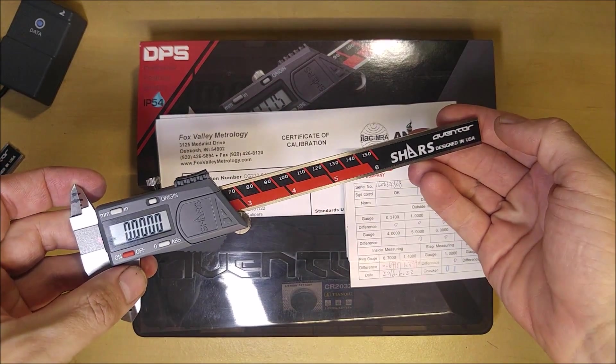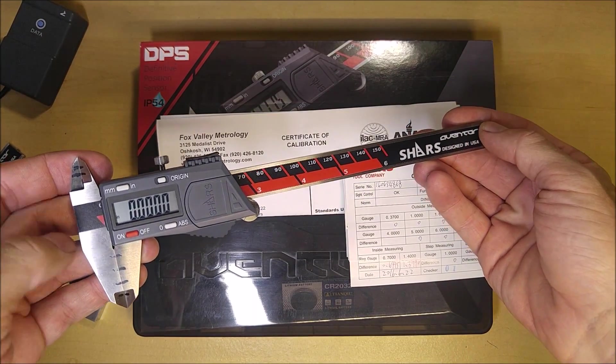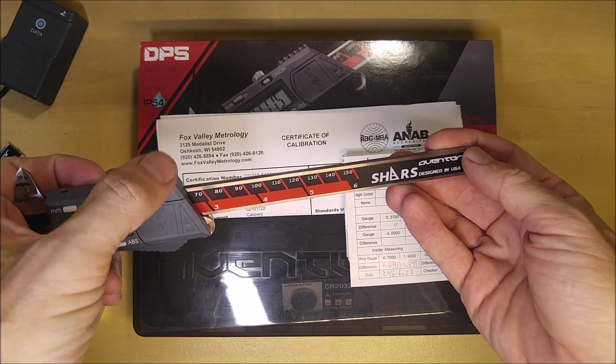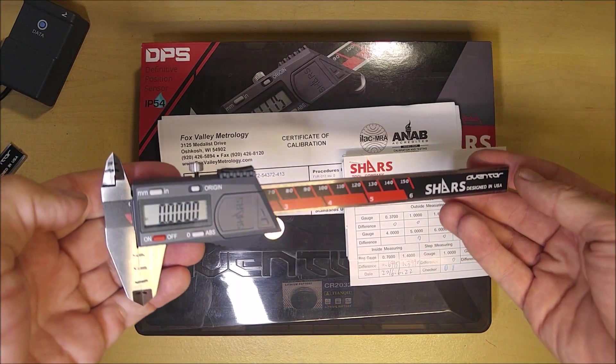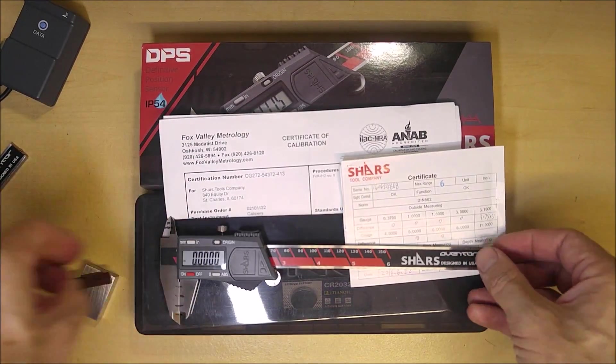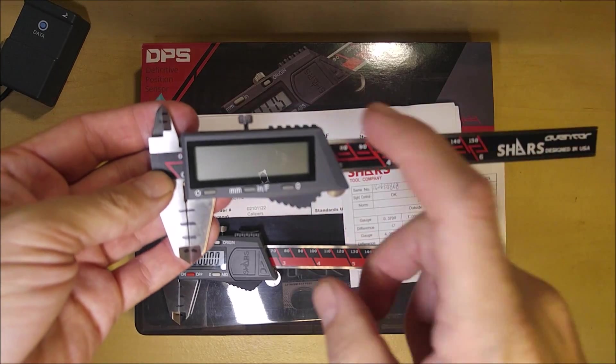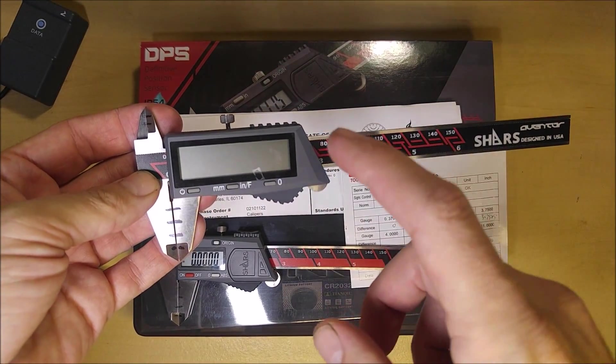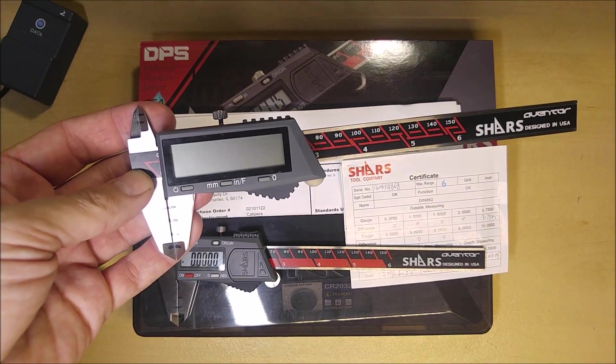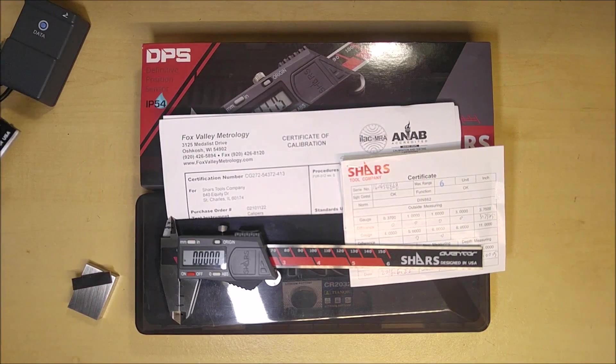Today at Guide to Class, I'm reviewing the Shars Aventor Digital Caliper. This is their Absolute Origin SPC Data Output Capable Digital Caliper. They do make a cheaper one as well, a large display format caliper without Absolute Origin. I'm going to be reviewing that in another video, so make sure you check out the links down in the video description below.